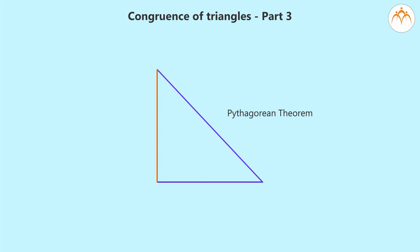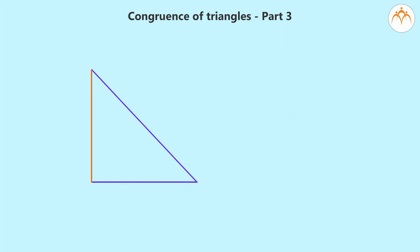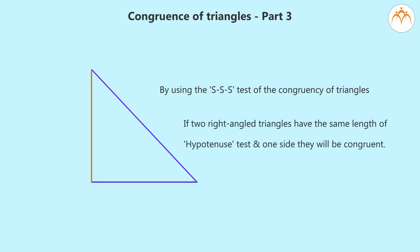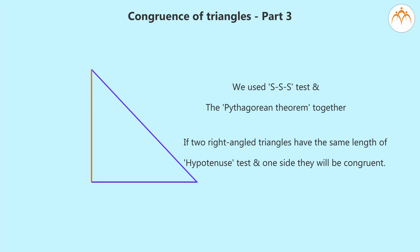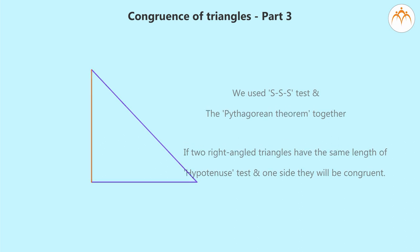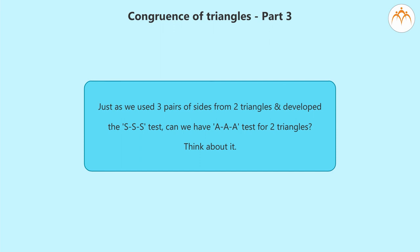So we know the lengths of all three sides of the triangle. By using the SSS test of congruency, any two such right-angled triangles that we draw will be congruent. So if two right-angled triangles have the same length of hypotenuse and one side, they will be congruent — this is called the Hypotenuse-Side (HS) test for right-angled triangles. Note that in developing this test we used the SSS test and the Pythagorean theorem together. Challenge: just as we used three pairs of sides to develop the SSS test, can we have an AAA test for two triangles? Think about it.